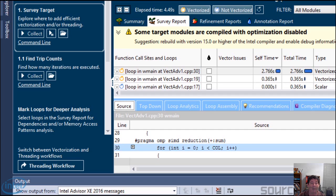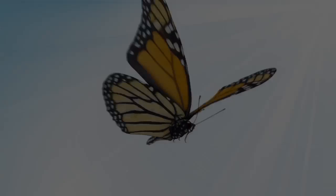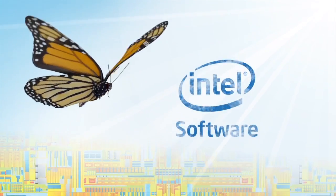In conclusion, vectorization makes applications a lot faster. Auto vectorization helps, but as we saw, Vectorization Advisor can let you know where there are additional places you can gain. This was part one — part two will go a lot more in-depth.